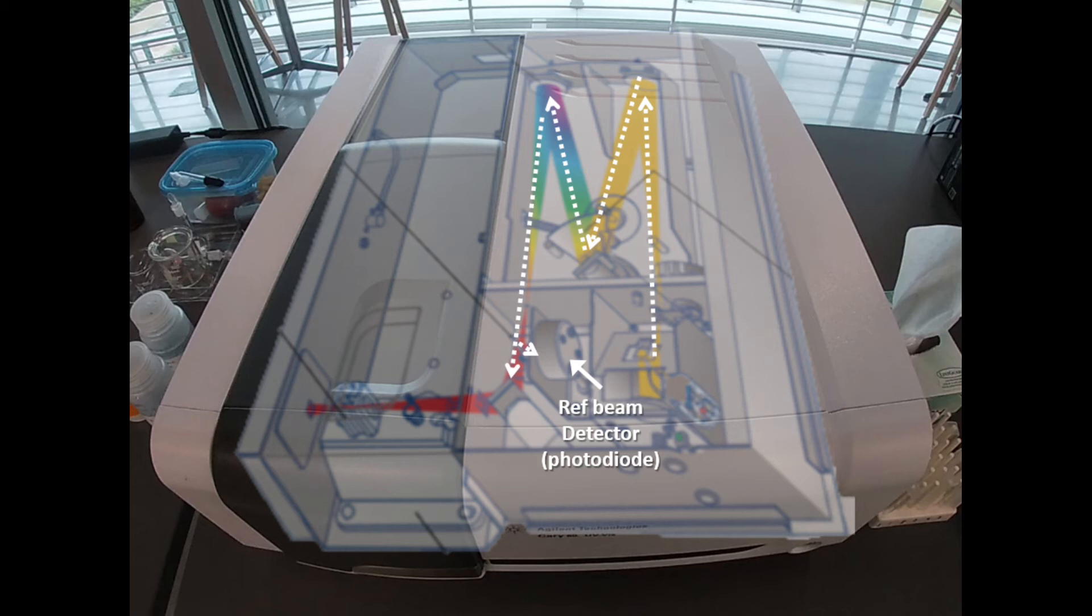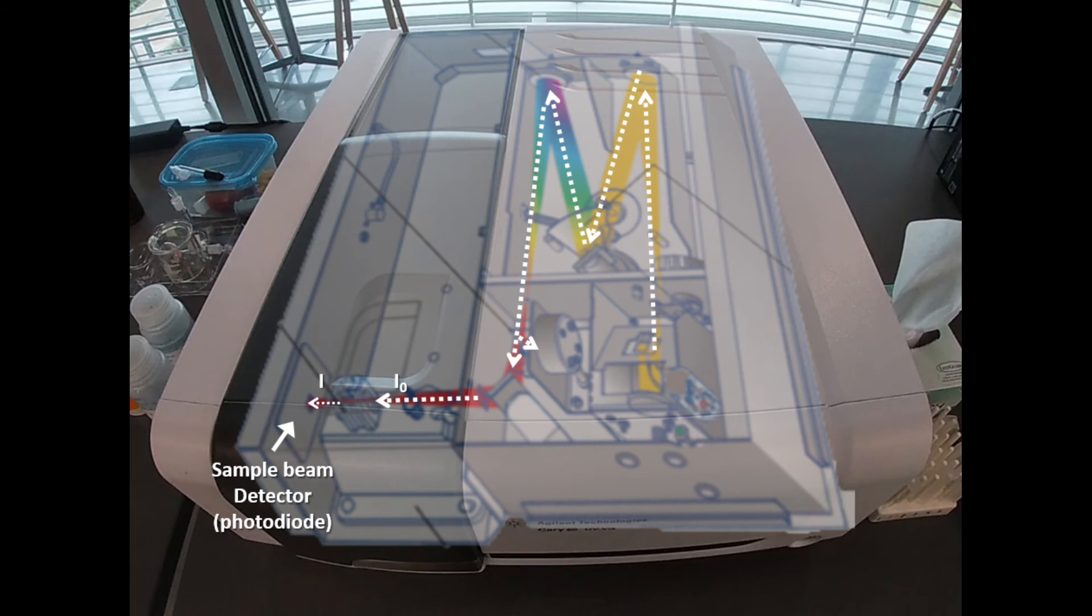This not only allows us to correct for any fluctuations in beam stability, but it also provides us our incident radiation intensity.